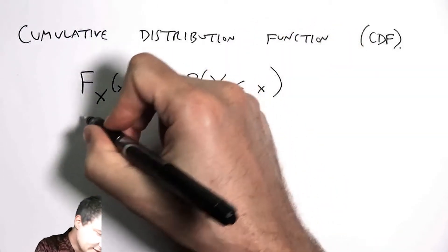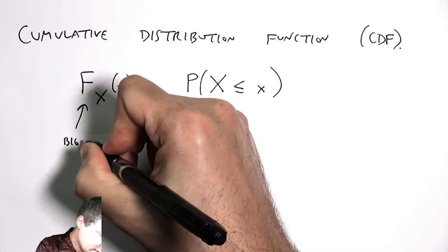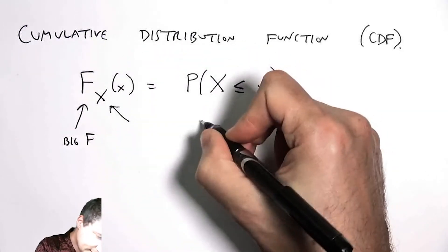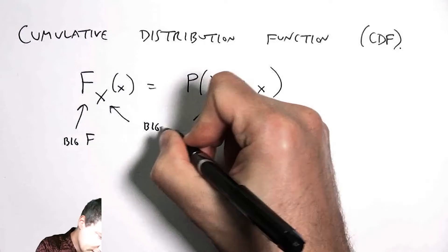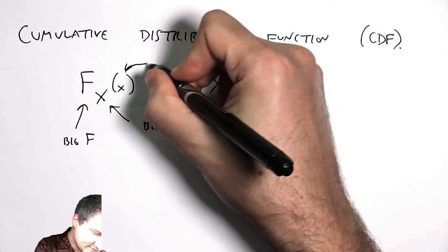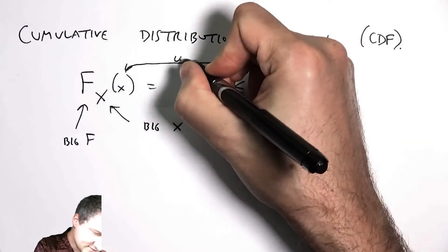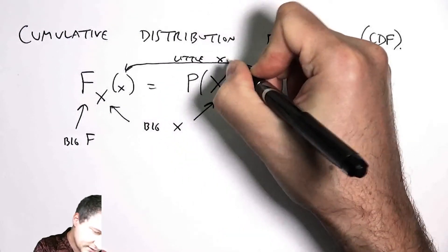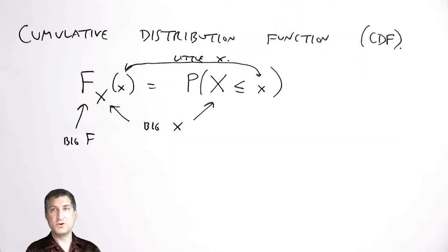And here this is a big F and these are big X's corresponding to the name of the random variable, and these guys are little x's corresponding to some number.